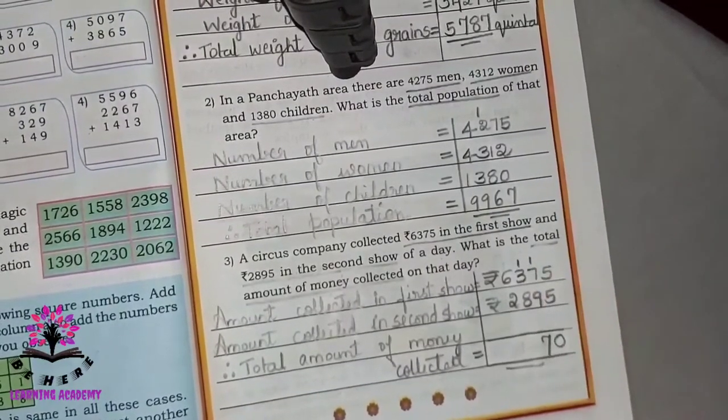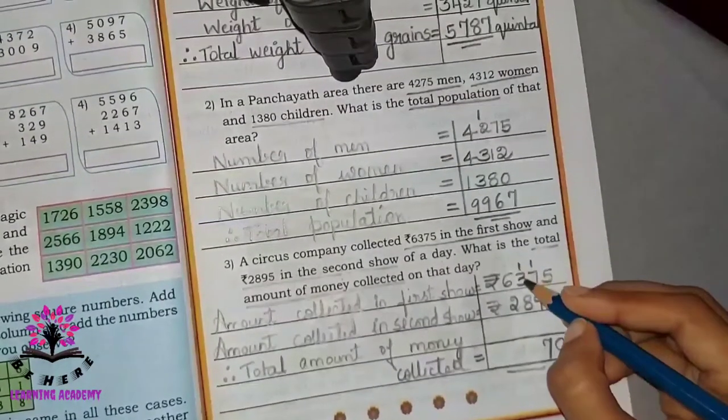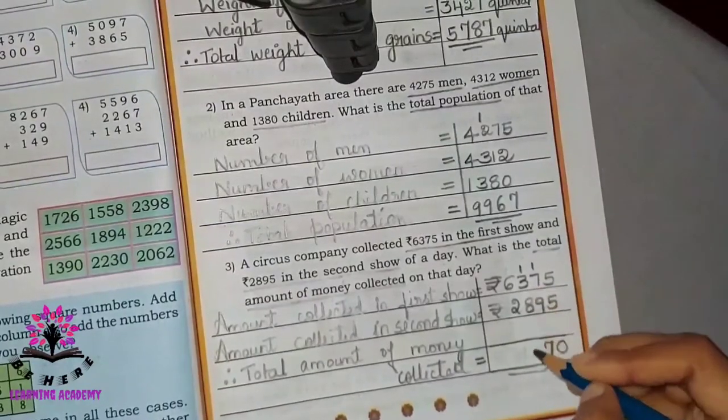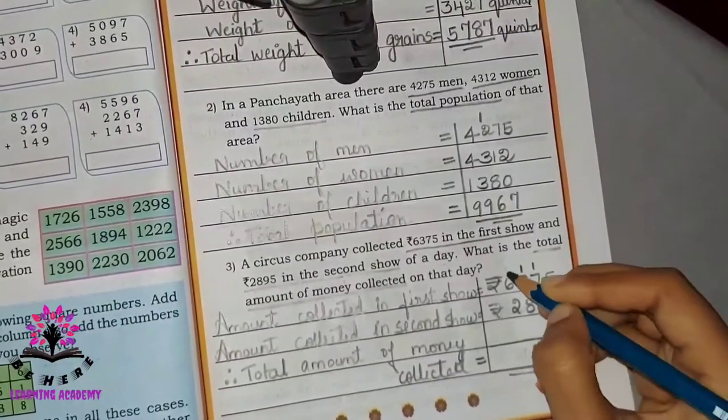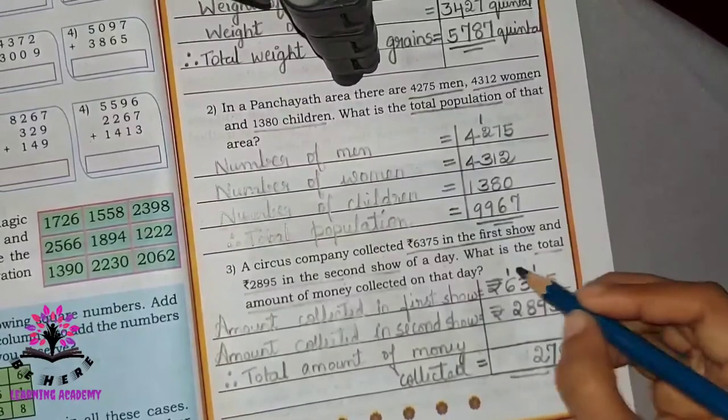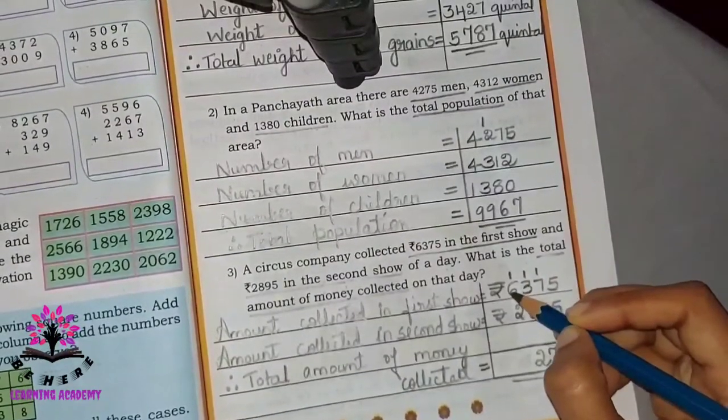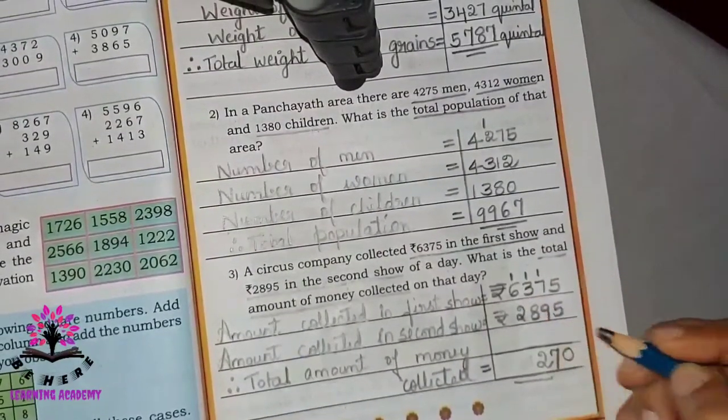3 plus 1 is 4. 4 plus 8 is 12. 6 plus 1 is 7. 7 plus 2 is 9.